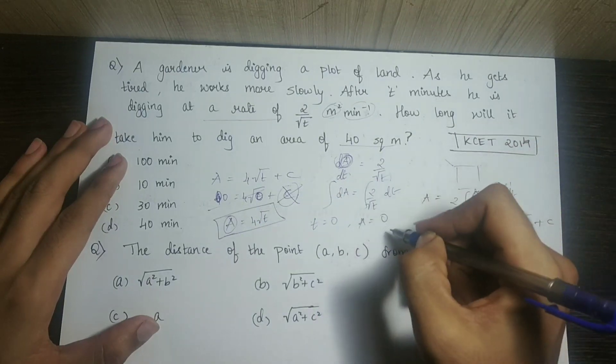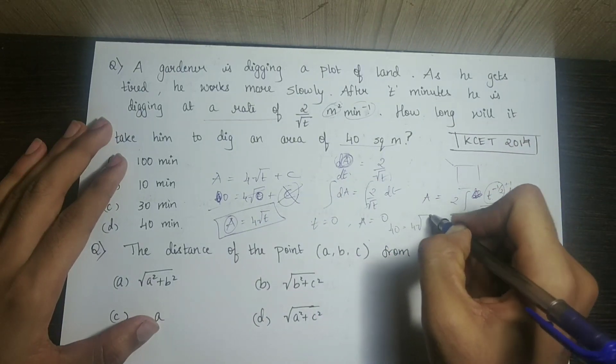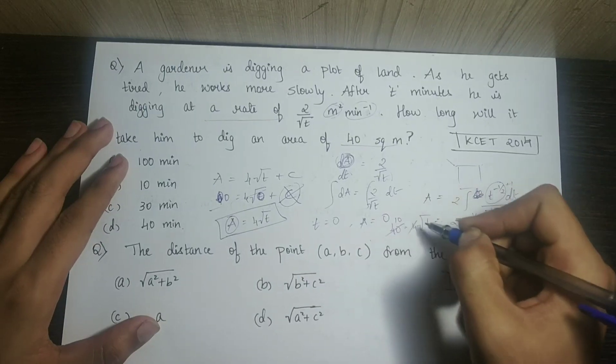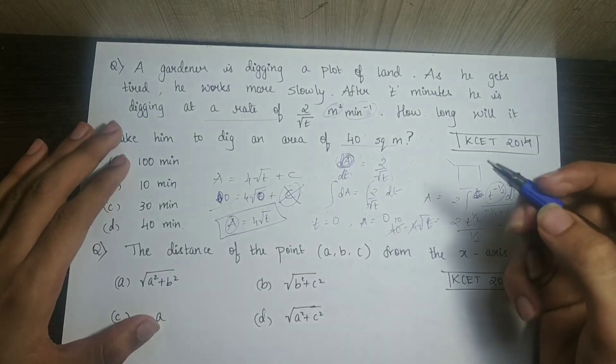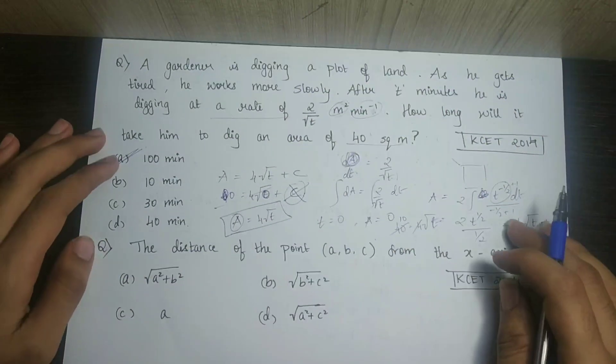So the final equation is A equals 4 root t. Setting A equal to 40: 40 equals 4 root t, so root t equals 10, and t equals 100 minutes. That is the correct answer.